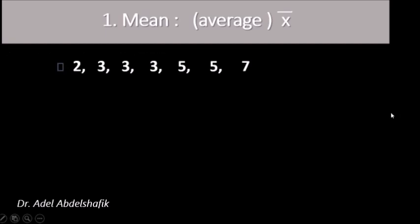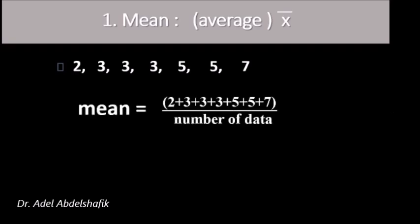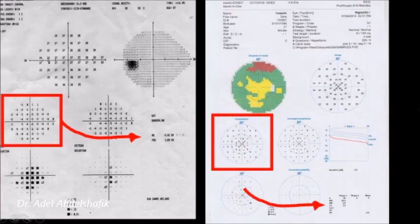To understand this, let's start with what is meant by the mean. If we have a group of values and want the average or mean, we add these values and divide by the number of values. So the mean, or X-bar, equals the summation of values divided by the total number of values. In the printout, these are the deviations from normal, and the mean deviation is shown here — the same applies in Octopus.